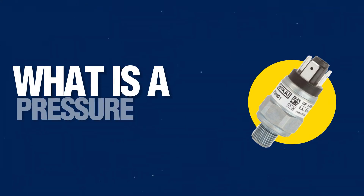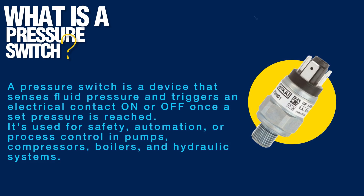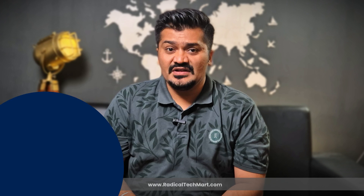First, let's start with what is a pressure switch. A pressure switch is a device that senses fluid pressure and triggers an electrical contact on or off once a set pressure is reached. It is used for safety, automation, or process control in pumps, compressors, boilers, and hydraulic systems.